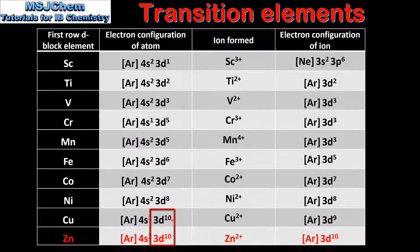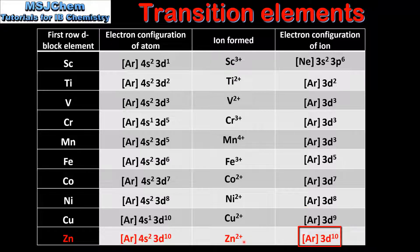Until we get to copper and zinc. Zinc is not considered to be a transition element. However, copper is a transition element. If we look at the electron configuration of the copper 2+ ion, we can see that it does have an incomplete D sublevel. However, the zinc 2+ ion has a full D sublevel. So copper is considered a transition element because its 2+ ion has an incomplete D sublevel, whereas zinc is not because as an atom or ion it does not have an incomplete D sublevel.